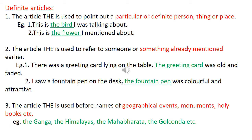Now the third point. The article The is used before names of geographical features, monuments, and holy books, etc. For example: the Ganga, the Himalayas, the Mahabharata, the Golconda Fort, etc. So that is what the definite article The is about. Thank you.